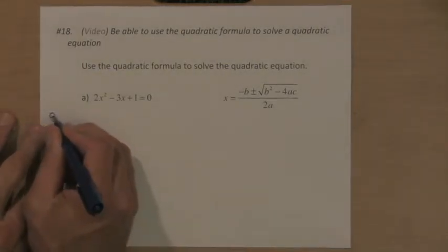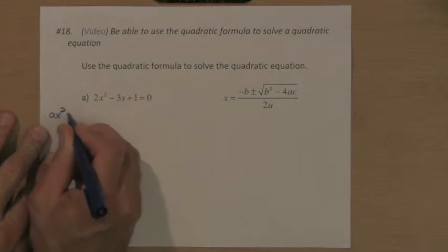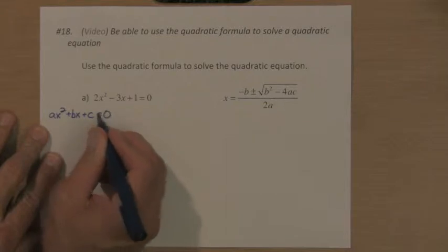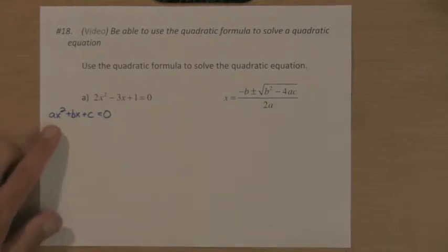You have to remember that the values of a, b, and c are always in this position. When it equals zero, the value of a is the number in front of x squared, b is in front of the x, and c is the constant, or not in front of a variable.